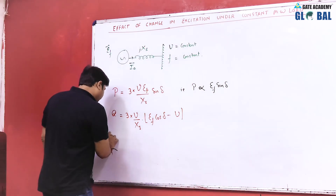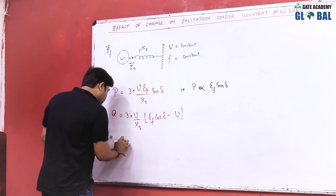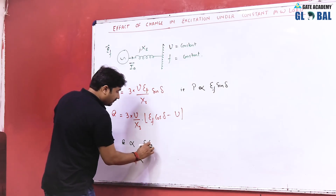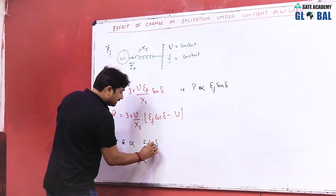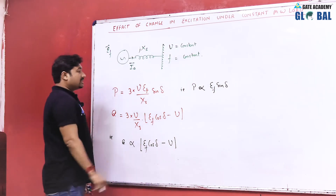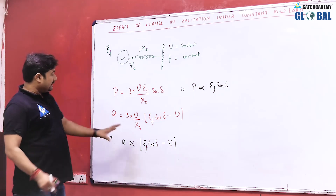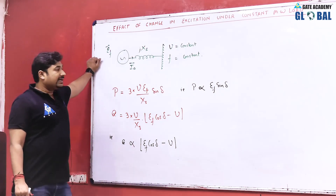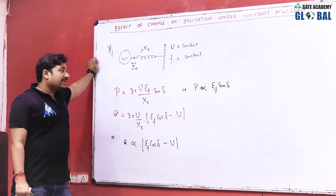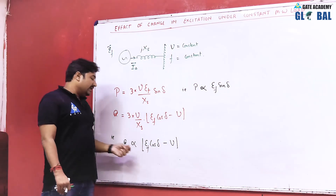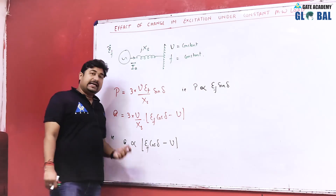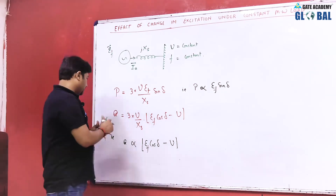Reactive power Q_out equals 3 × V/Xs × (EF cos δ − V). So reactive power is proportional to (EF cos δ − V). From here we can easily identify that if excitation and load angle are changing, how the active power is changing, and how the reactive power output is changing. This is the output power supplied by the generator to the load.